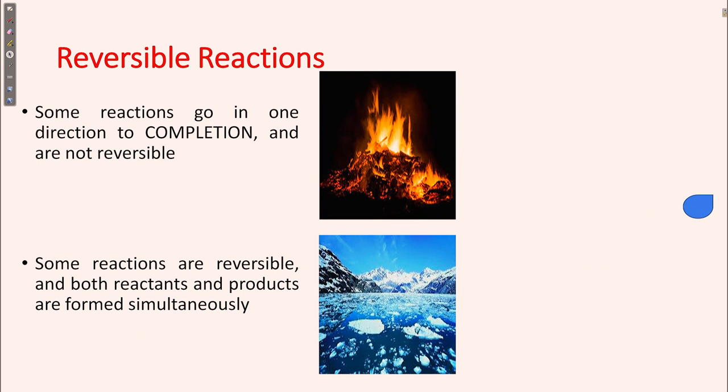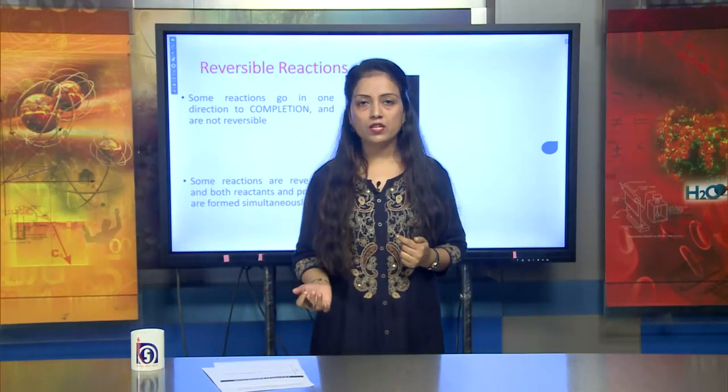First, let's discuss reversible reactions. Reactions are of two types: reversible and irreversible. In reversible reactions, the forward reaction takes place as well as the backward reaction — the reactant can change into the product, and the product can also change back into the reactant. In irreversible reactions, the reactant always changes into the product, but the product cannot be converted back into the reactant.